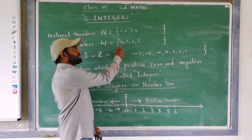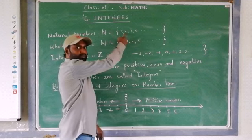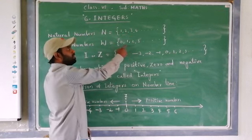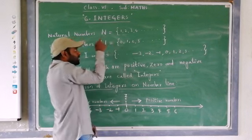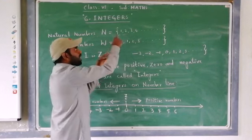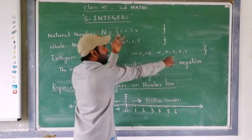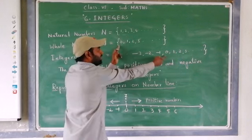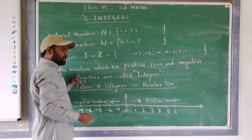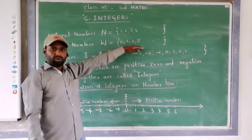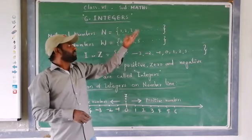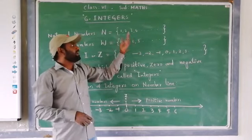For example, 0 is present in the whole number set but not in the natural number set. Every number in the natural numbers set is present in the whole number set, and the whole number set is again present in the integers. But every number in the integer set may not be in whole numbers, and every number in the whole number set may not be in natural numbers. Every natural number is a whole number, and every whole number is an integer, but not the reverse.